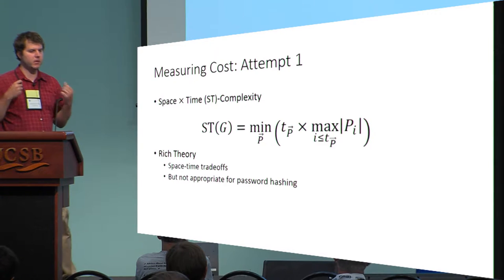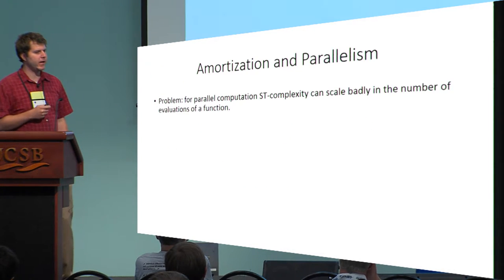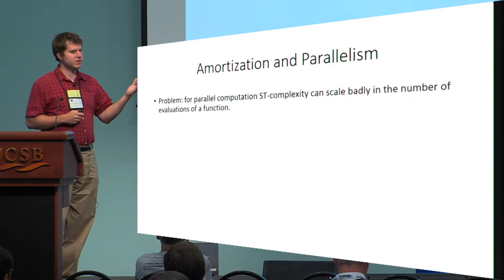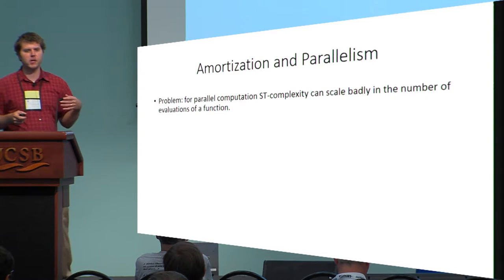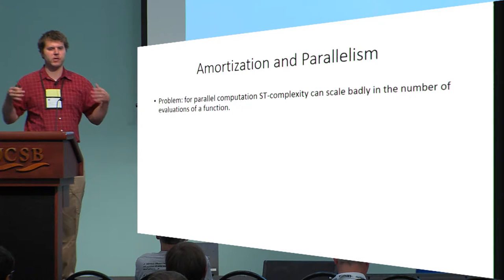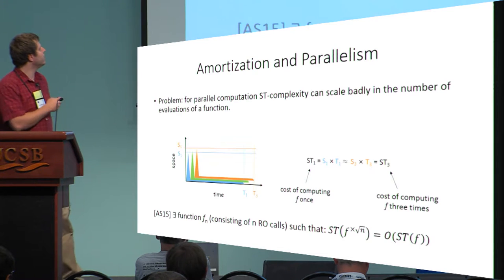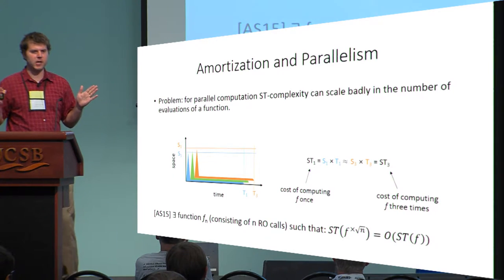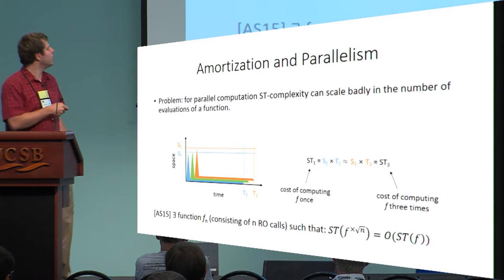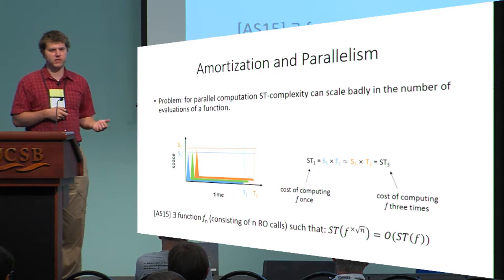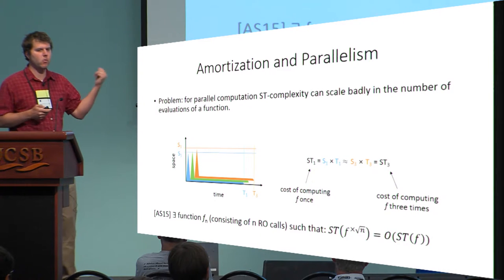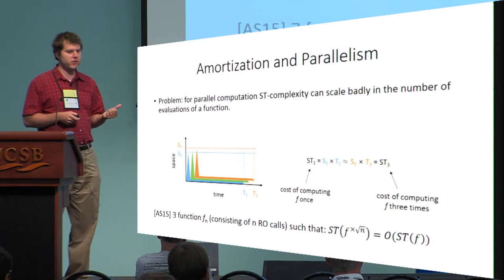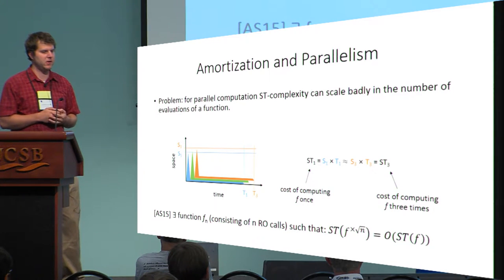The problem is amortization. For parallel computation, space-time complexity can scale badly in the number of evaluations of the function. Remember that the adversary is trying to compute this function for multiple different password guesses — many instances. Consider a function which requires lots of space at the beginning and then runs for a long time with minimal space usage. If we can execute this function in parallel, then effectively the cost of computing, say, three instances really has space-time complexity just about equal to the cost of computing one instance. Alwin and Serbenenko showed that you can construct example functions where this scaling is even much worse — you can compute √n functions with the same space-time cost.